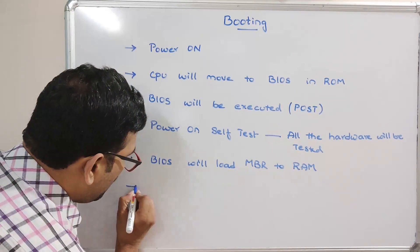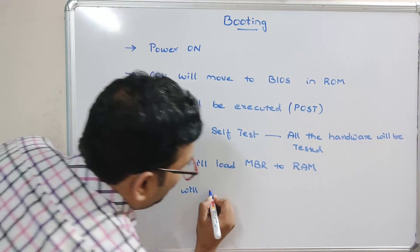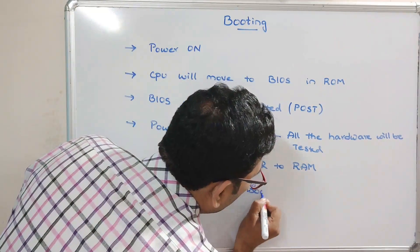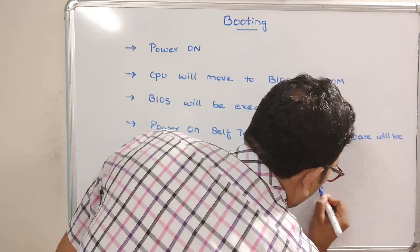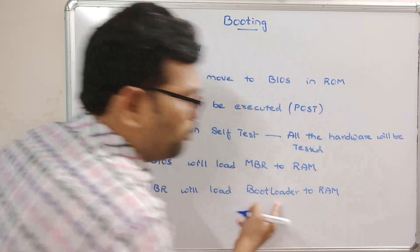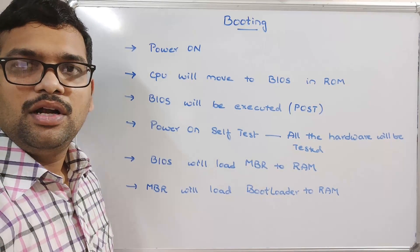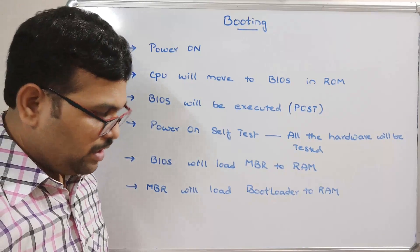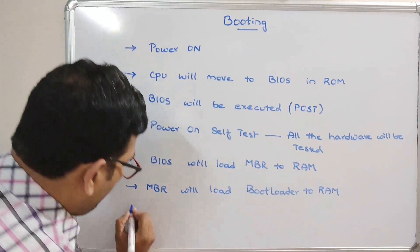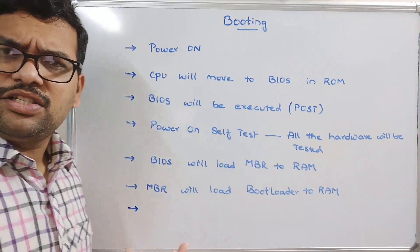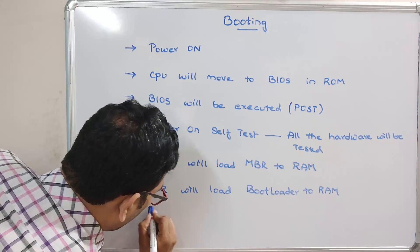Next, the MBR will load the boot loader to RAM. The boot loader is the component that loads the operating system into RAM. There are different stages of the boot loader — Stage 1 and Stage 2.